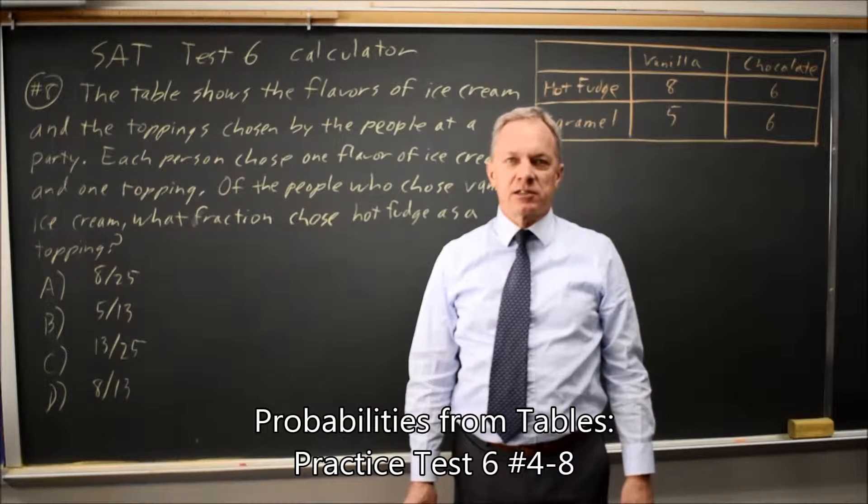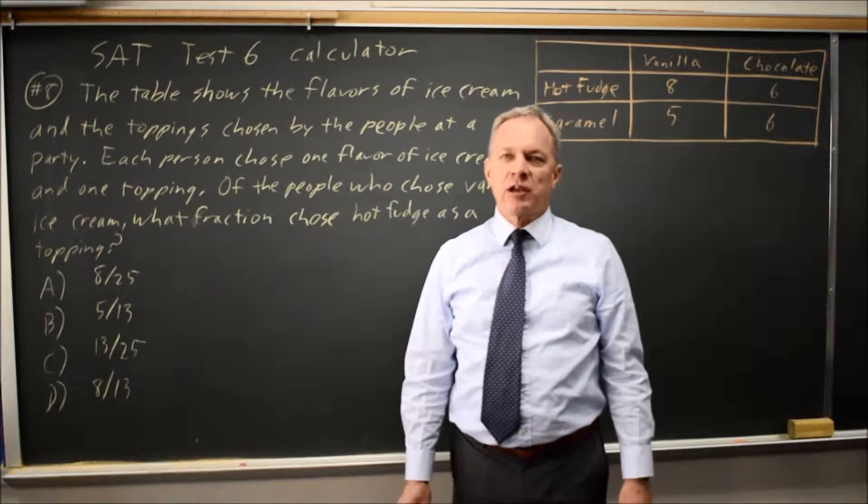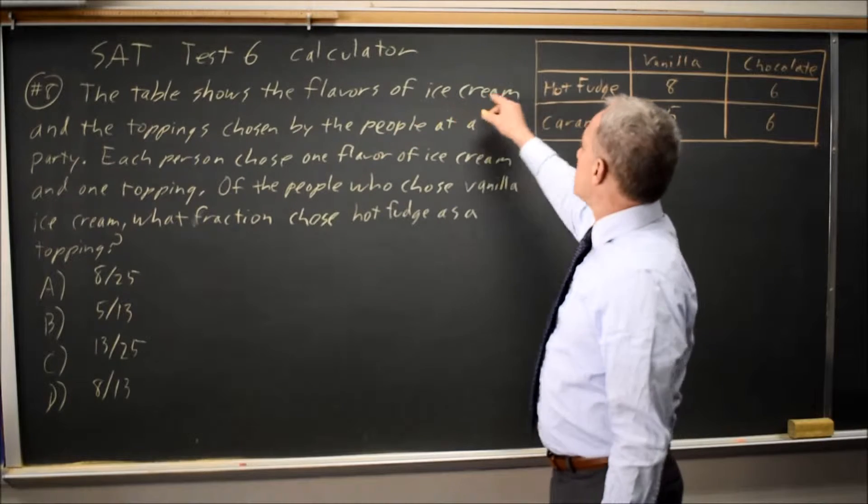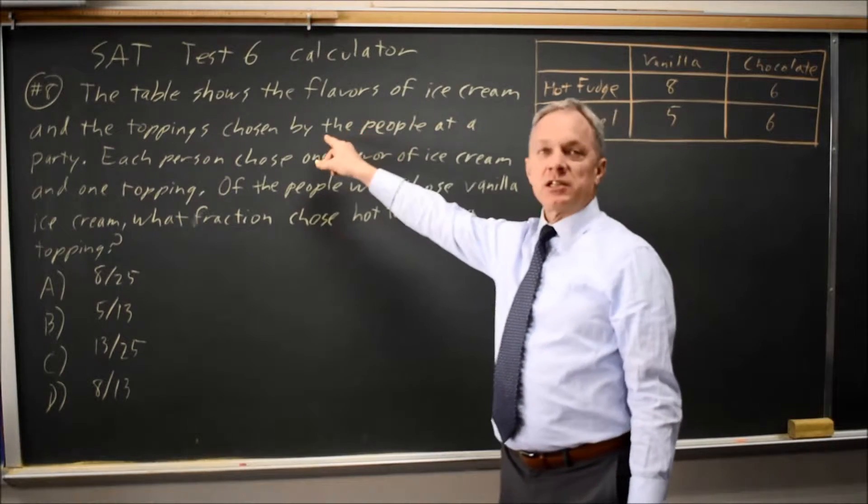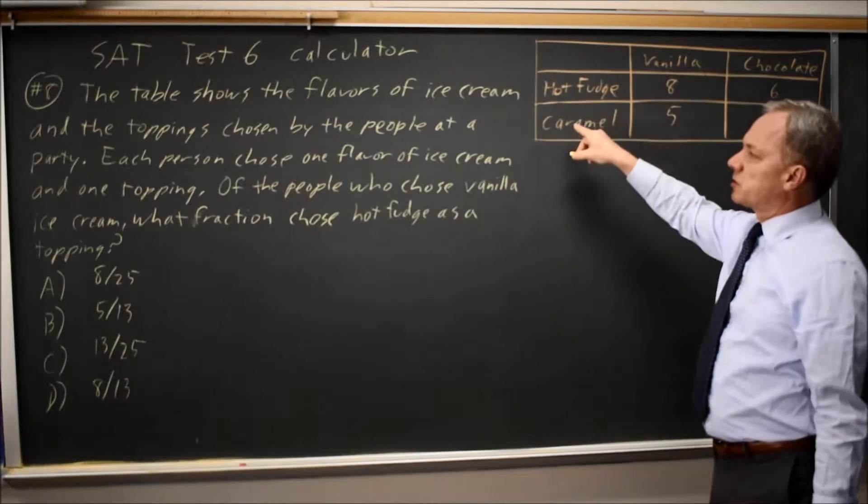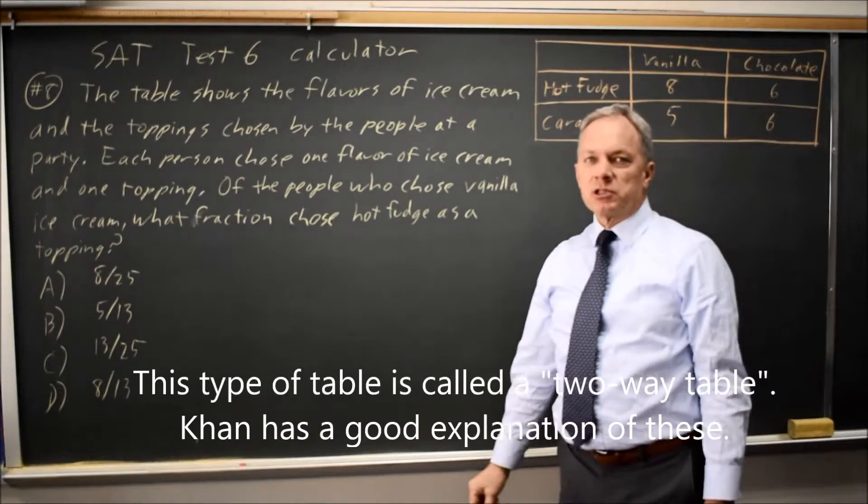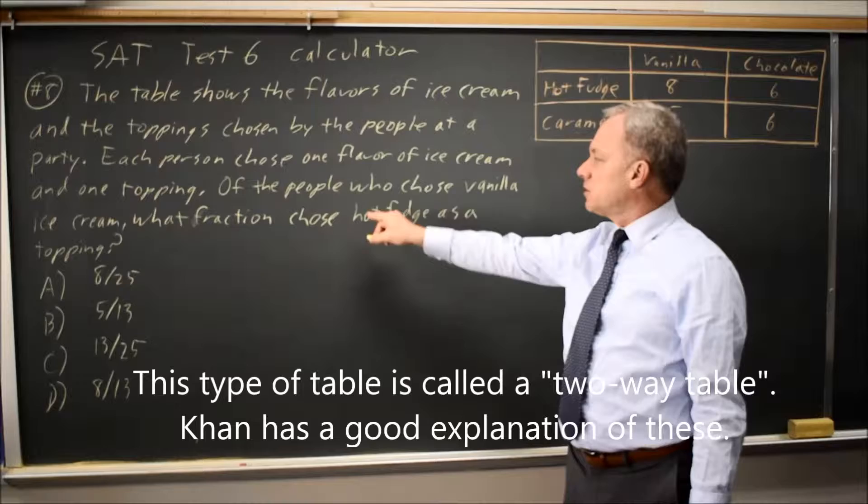This is SAT Test 6, Calculator Section Question 8. We have a table categorizing information into two categories, flavors of ice cream chosen and the toppings chosen by people at a party. Each person chose one of each, and the question is, of the people who chose vanilla ice cream, what fraction chose hot fudge as a topping?